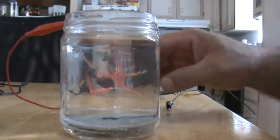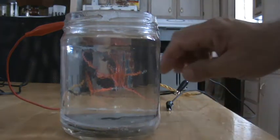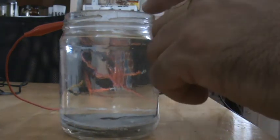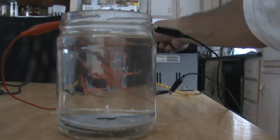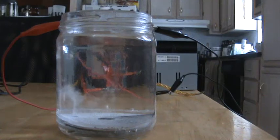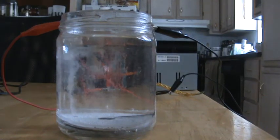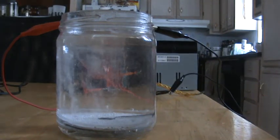And then you hook your leads to it. Hook the positive to the one on the bottom. Hook the negative and turn on my power supply. And you can see hydrogen being made. It's very simple.